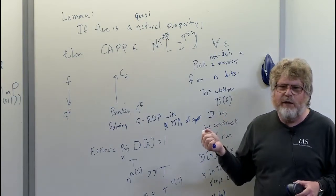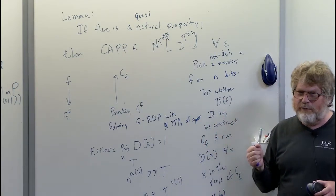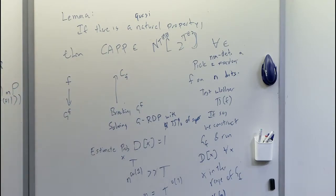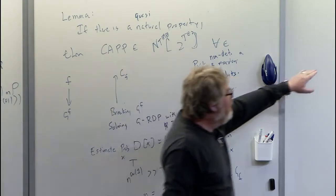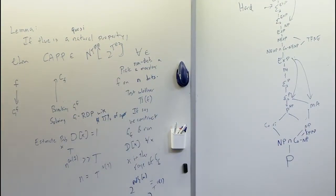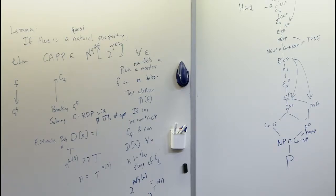There's actually a good reason to believe that quasi-natural properties exist. TFNE is just a little bit above NE-intersect-coNE. Here's the claim: if NE-intersect-coNE is not contained in P/poly, then there are quasi-natural properties.